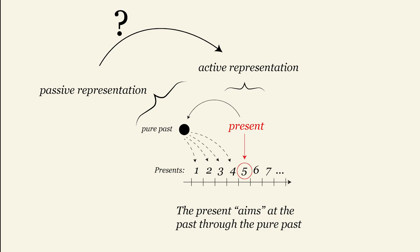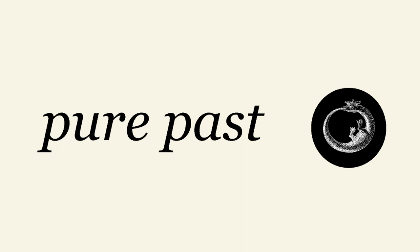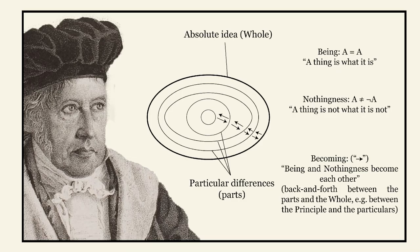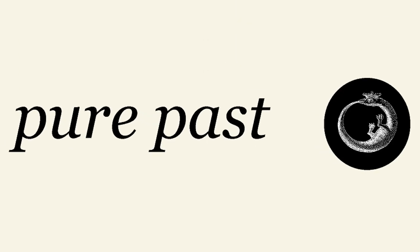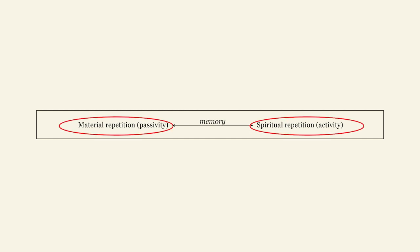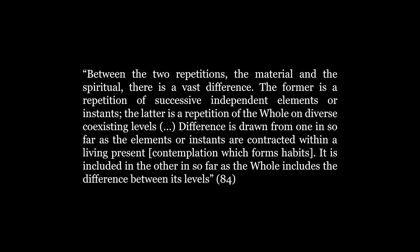The answer, in a nutshell, is that the space of the pure past forms a self-contained totality, similar to Hegel's whole, that we have seen last time, such that now subjectivity contains its condition. In a word, it can change itself. Here, Deleuze distinguishes between two repetitions, one which he calls material, the other spiritual. Between the two repetitions, the material and the spiritual, there is a vast difference. The former is a repetition of successive independent elements, or instances. The latter is a repetition of the whole, on diverse coexisting levels. Difference is drawn from one in so far as the elements, or instances, are contracted within a living present, namely the contemplation, which forms habit. It is included in the other in so far as the whole includes the difference between its levels.